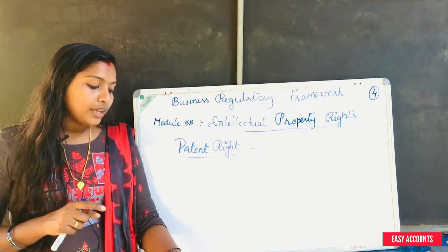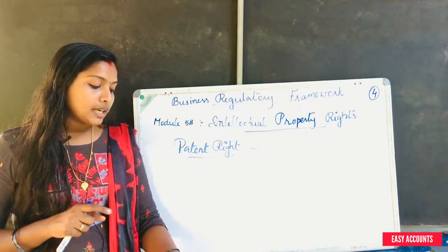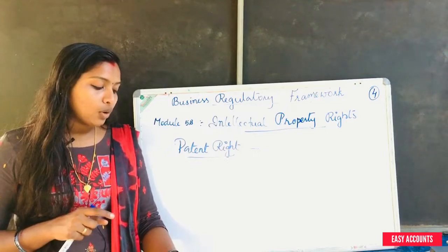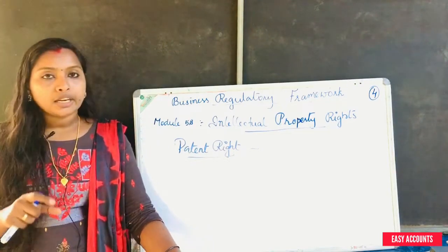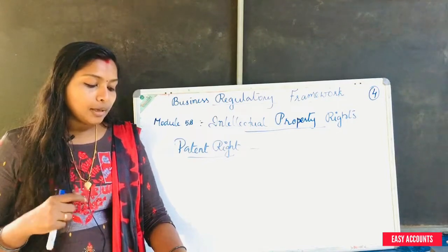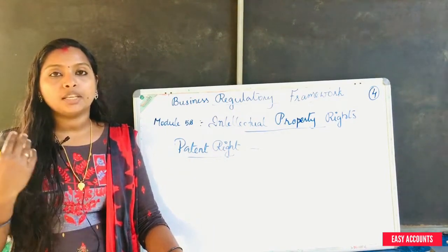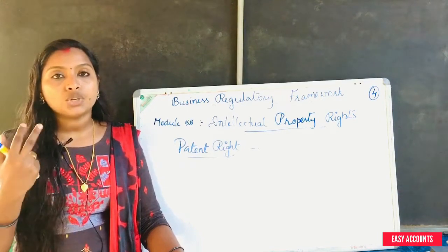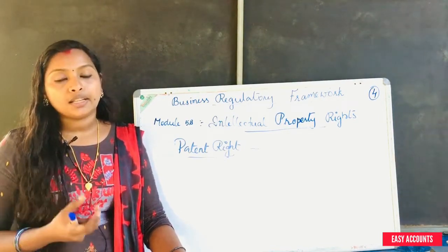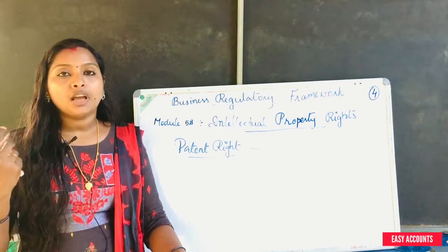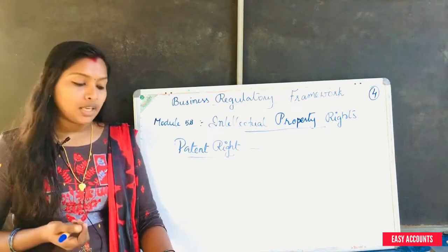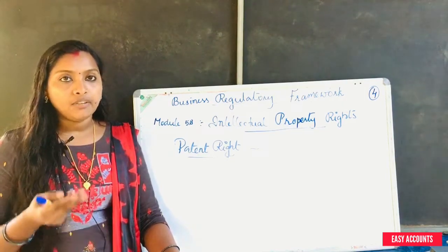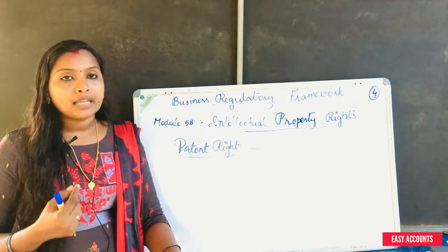Where the report of the examiner received by the controller is adverse, the controller is required to issue a notice to the applicant giving particulars of objections. After the controller gives notice to the applicant and announces the hearing, the application is recorded.